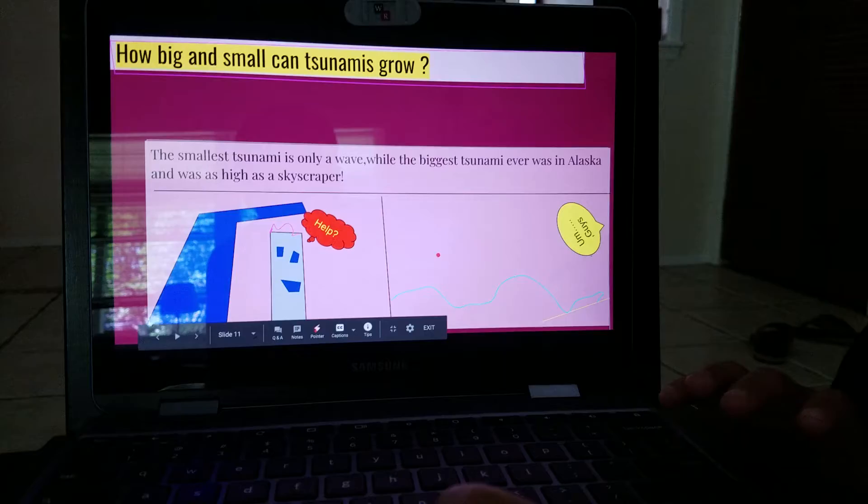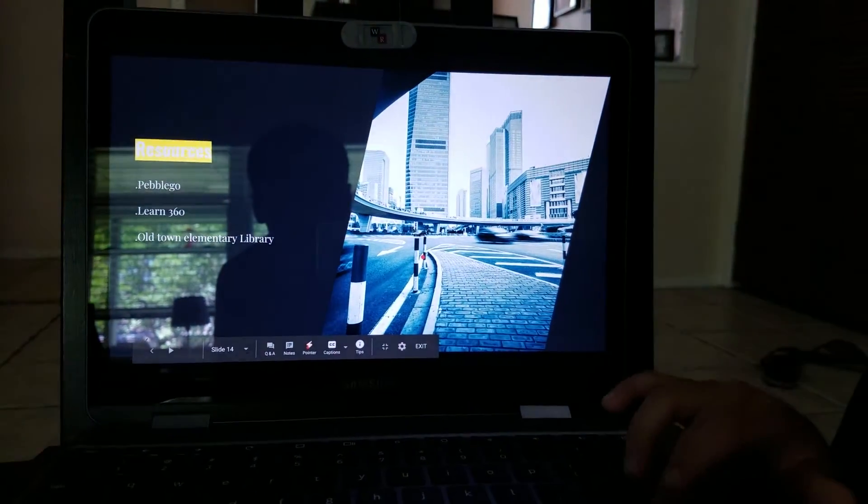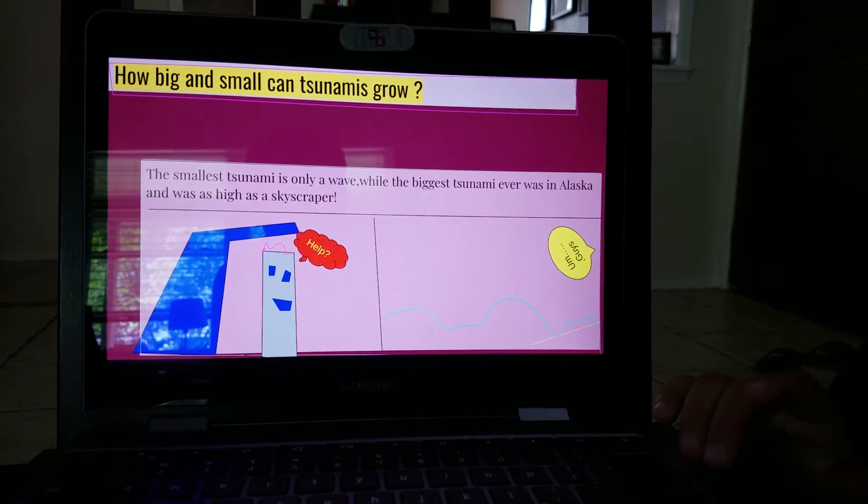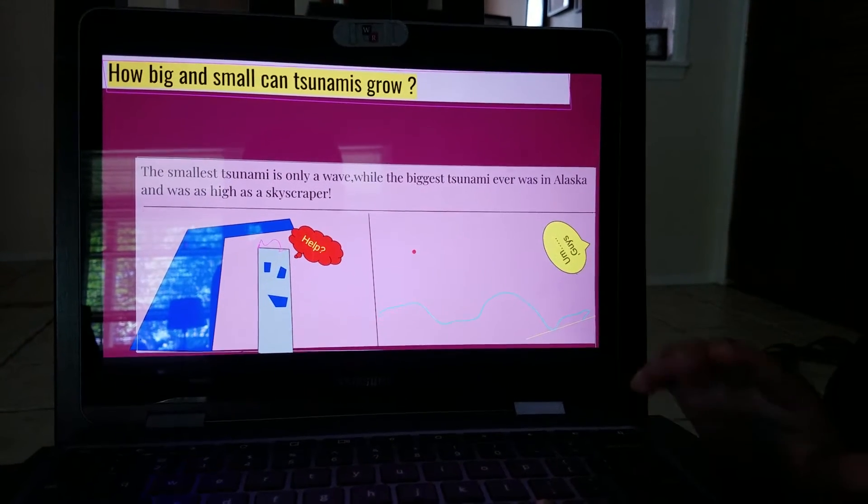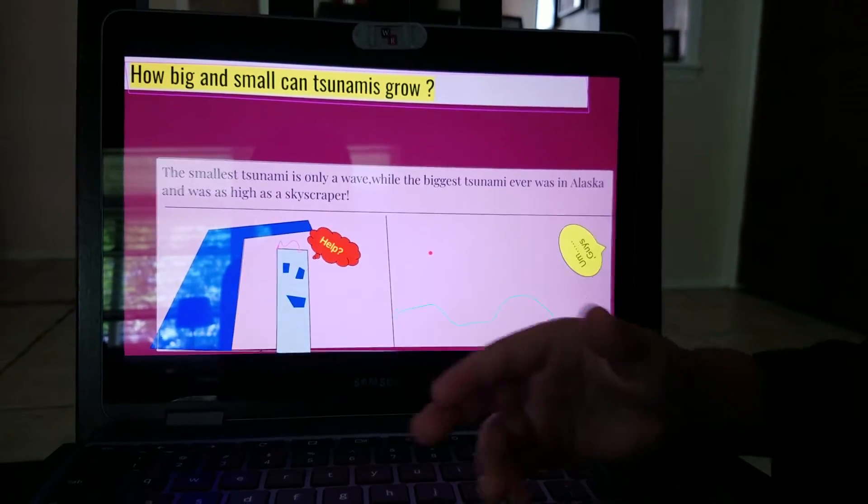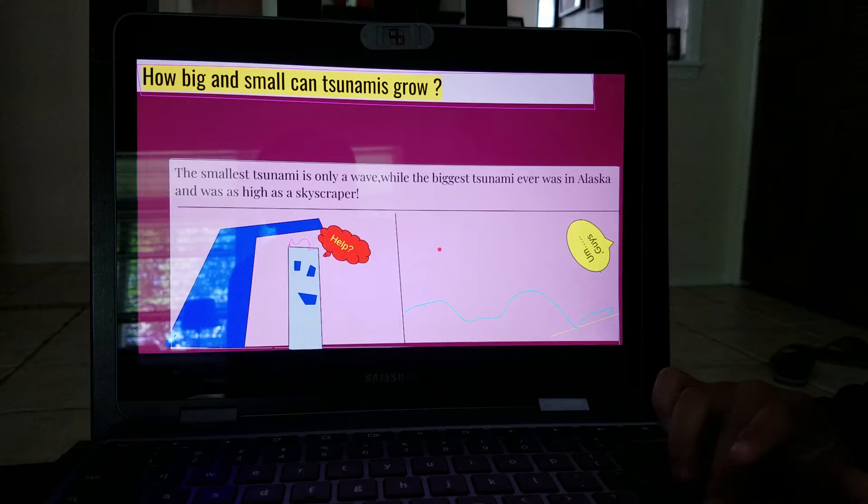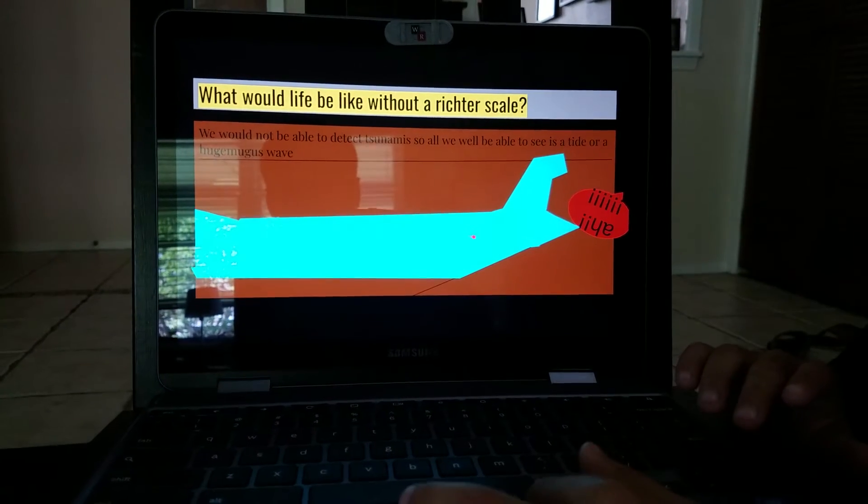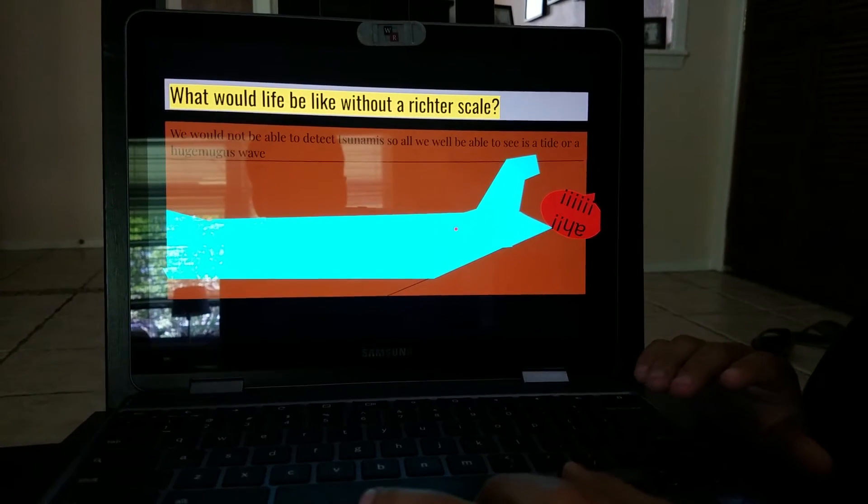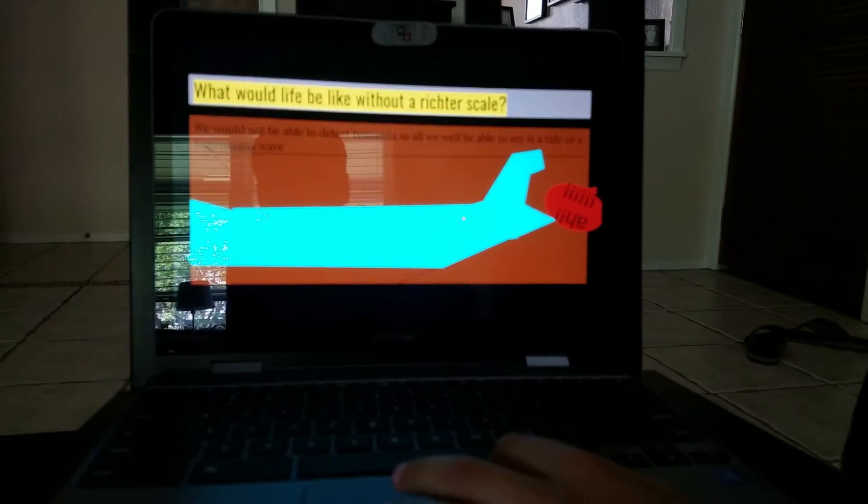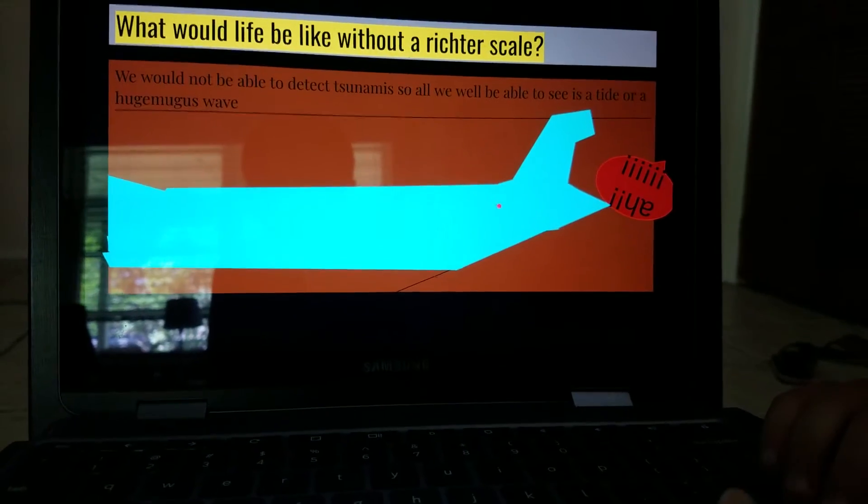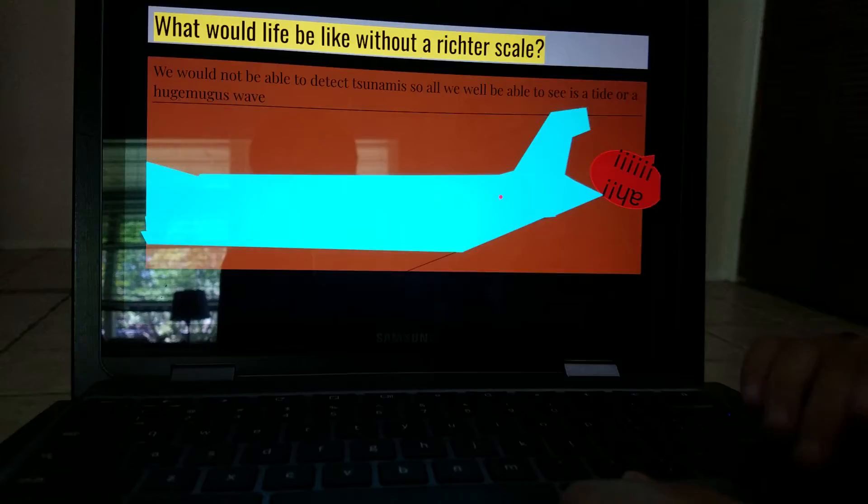And how big and small can tsunamis grow? The small tsunamis are only a wave. While the biggest one ever in Alaska was as big as a skyscraper. Without the technology, we would not be able to detect tsunamis. So all we will see is the tide from the earthquake or a wave from the volcano or the landslide.